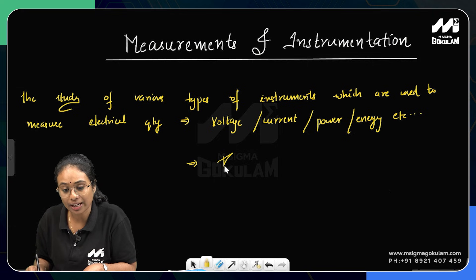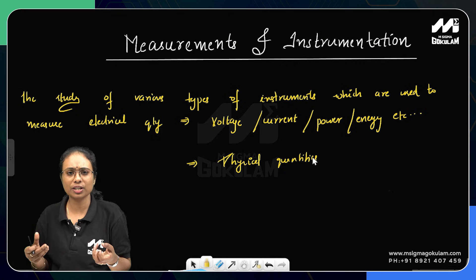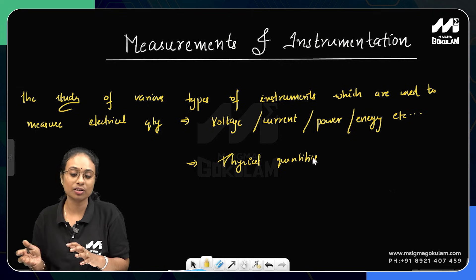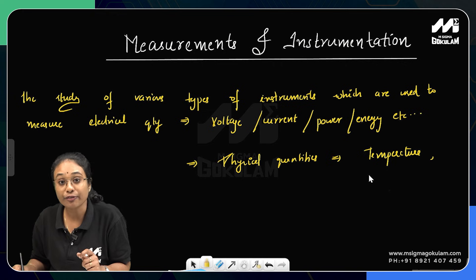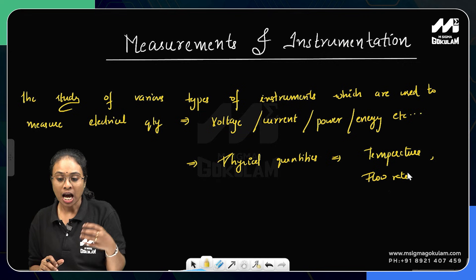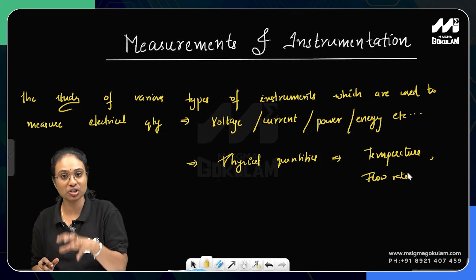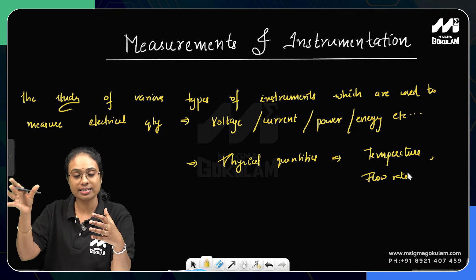Physical quantities include temperature, pressure, concentration, flow rate, stress, and strain. For example, temperature measurement, fluid and flow rate measured in meter cube per second. These are the physical quantities we call measurements. You will learn more in further classes.